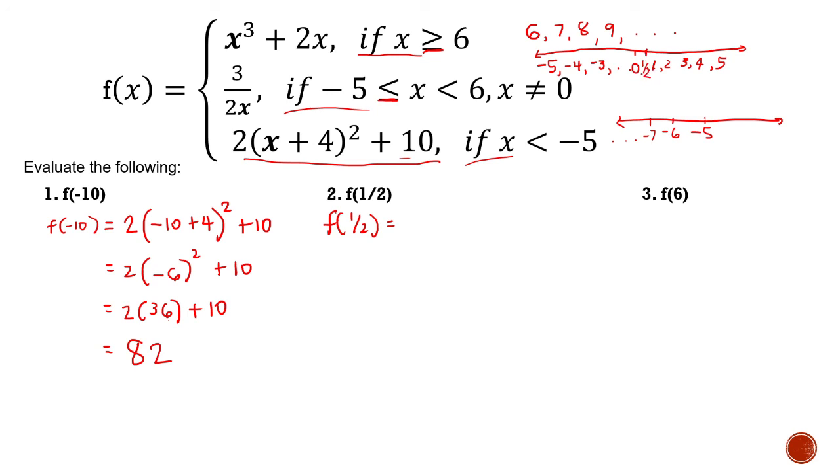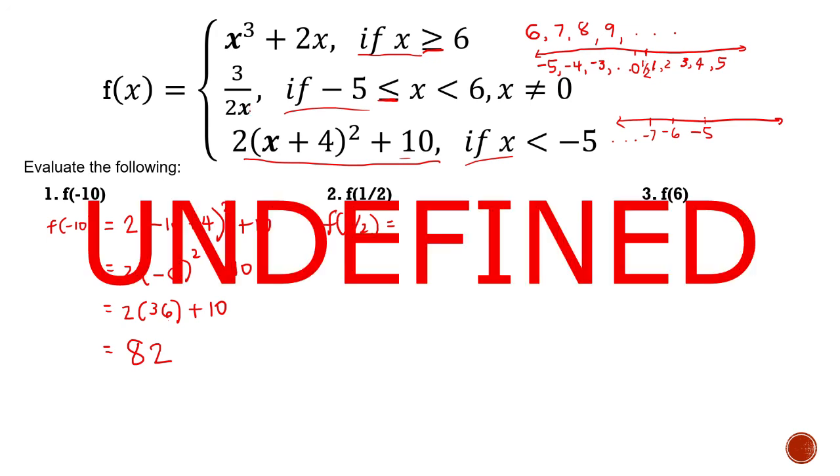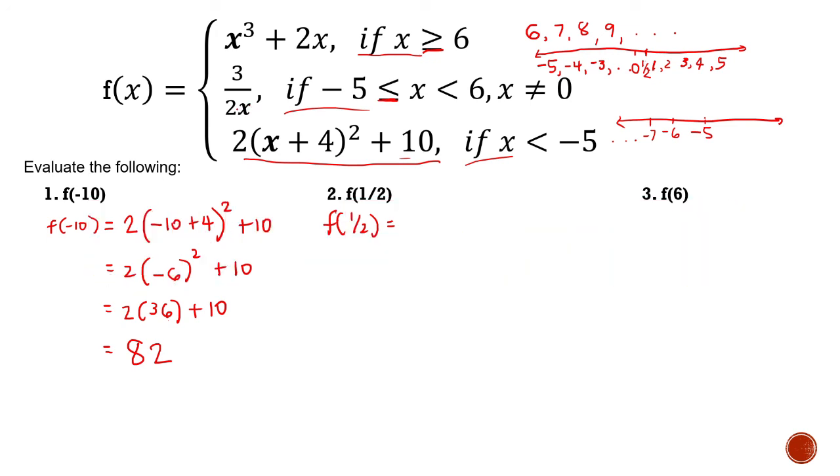And if you look at the second interval, there's an included condition, which is x not equal to 0. Well, we do not include 0 here because if we substitute 0 in the second piece, it will become undefined, right? 2 times 0 is 0, and 3 over 0 is undefined. We can never divide a number by 0. So 1/2 belongs to the second interval, therefore we substitute 1/2 in the second piece.